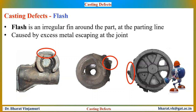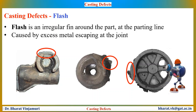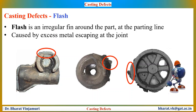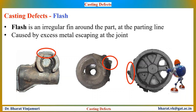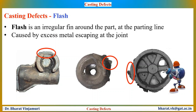Such a defect can be avoided by proper assembly of the mould and cores. There should be enough weight on the top part of the mould so that the two parts fit together tightly. Flash can be removed by breaking it off with a hammer or pliers and filing it down onto the parting line.